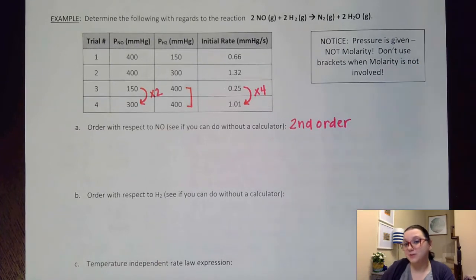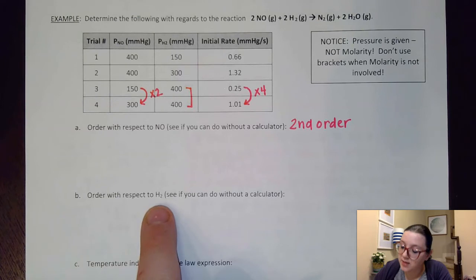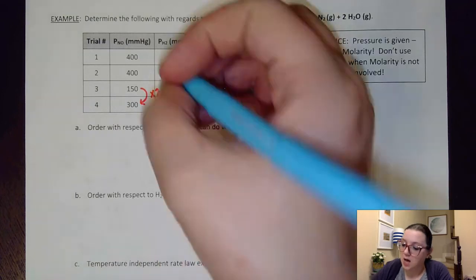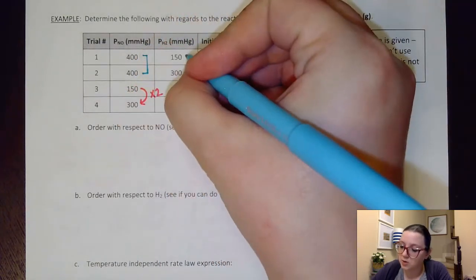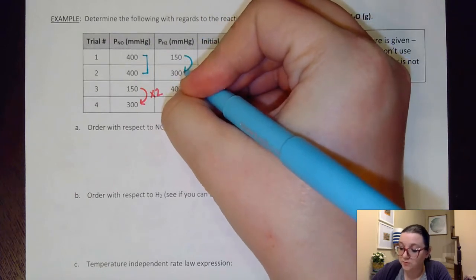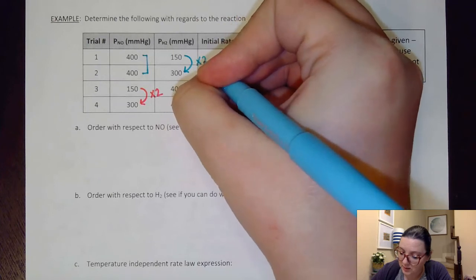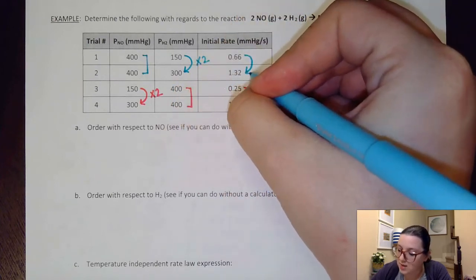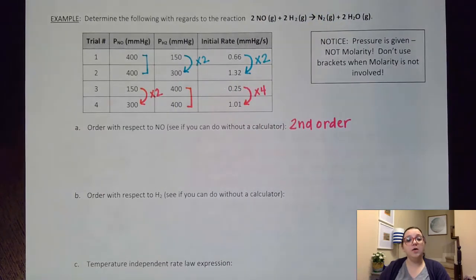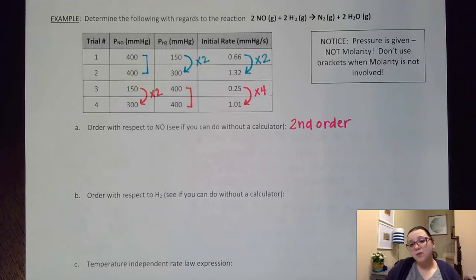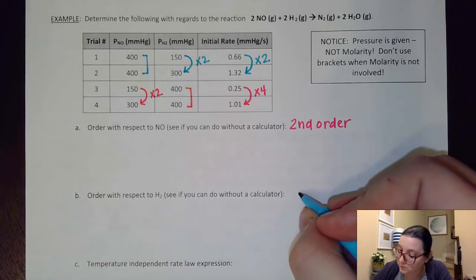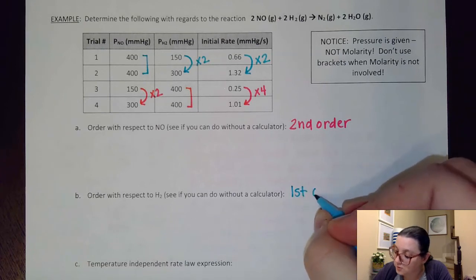We're going to confirm that here in just a minute. But again, I wanted you to see how you could kind of think about this. The same thing goes for the H2. Now to solve H2, I would want two trials where NO remains consistent. I see that's happening on trials one and two. So again, I'm going to look and see what my numbers are doing. I went from 150 to 300 here. So that's doubling. But here I noticed that the rate also doubled. So if the pressure is doubling, and then thereby the rate is doubling, that probably means that that pressure was only raised to an exponent of one. And so therefore, I would predict that H2 is a first order substance.